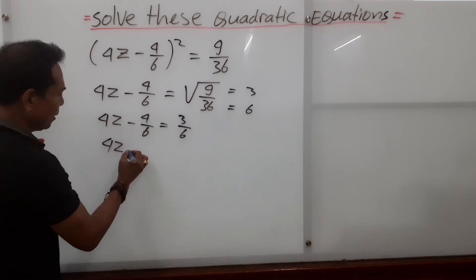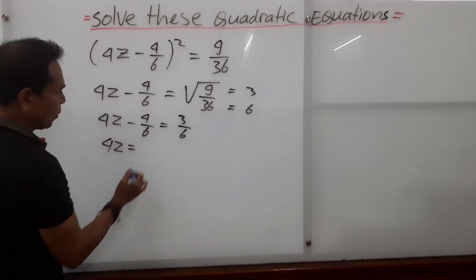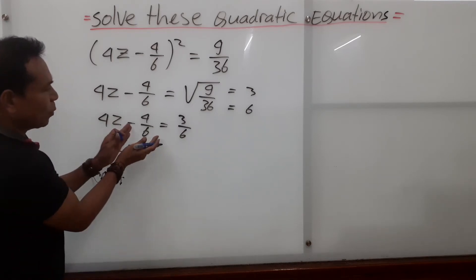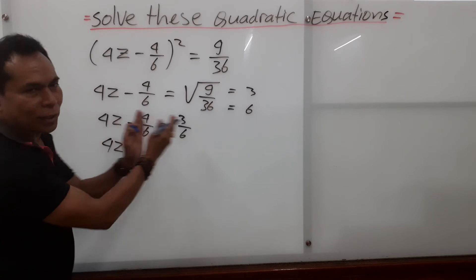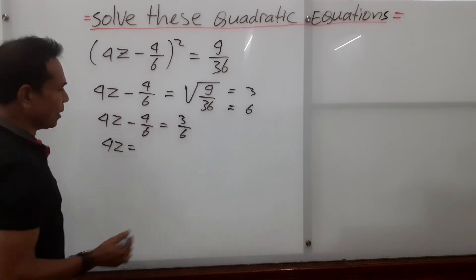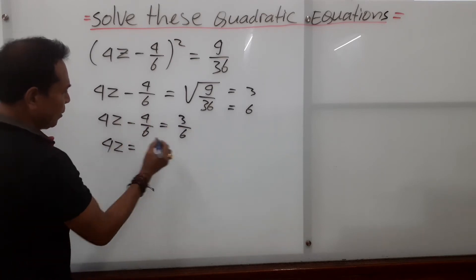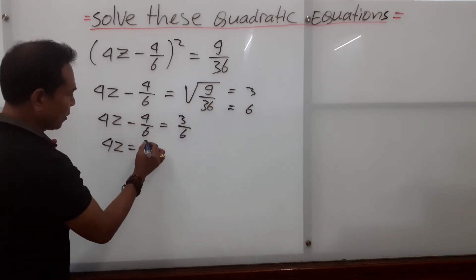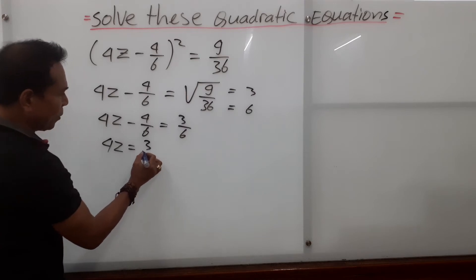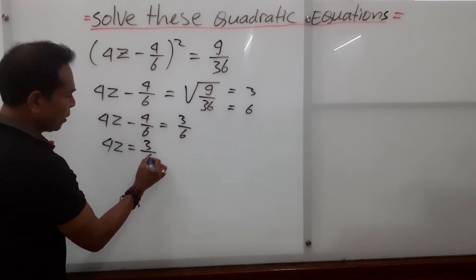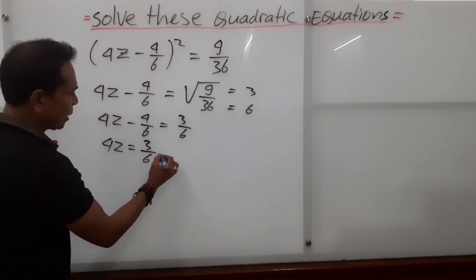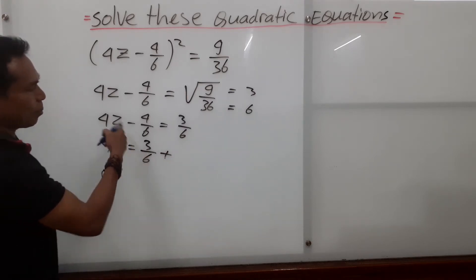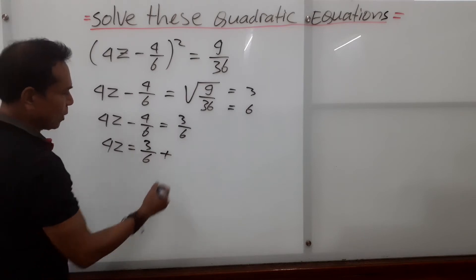So 4z equals — we remove the 4 over 6 to the other side, so it becomes plus 4 over 6. We move it to the other side, so we have 3 over 6 plus 4 over 6.